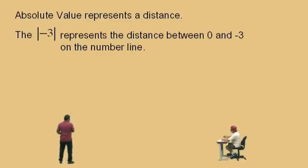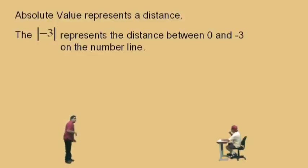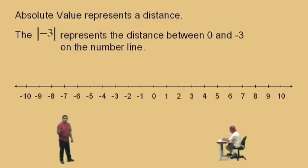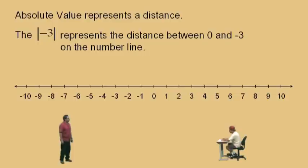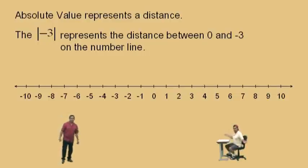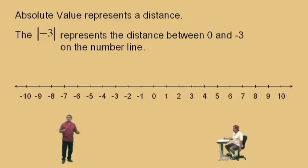The absolute value of negative 3 represents the distance between 0 and negative 3 on a number line. So Charlie, if somebody asks you how far is it from here to the grocery store, what are you going to say? About 5 miles. You're not going to tell them it's negative 5 miles, right? Distances are always positive. That's why absolute values are always positive.